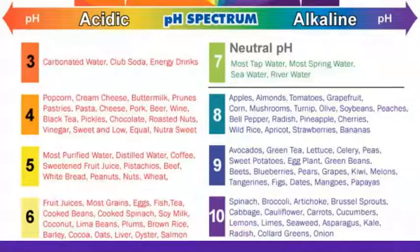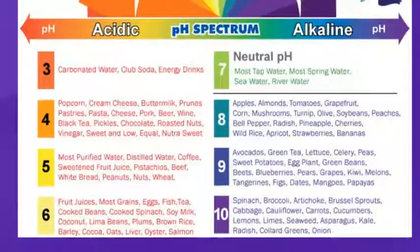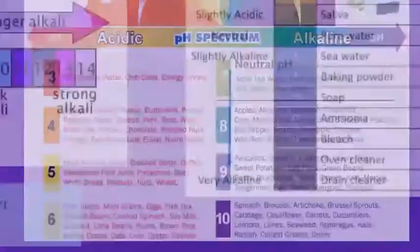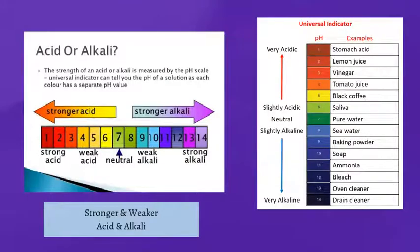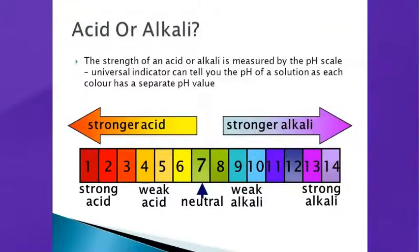pH 9 — avocados, green tea and so on. pH 10 — spinach, broccoli and so on. These are the substances used to test for acidic, alkaline and neutral. The strength of an acid or alkali is measured by the pH scale. A universal indicator can tell you the pH of a solution as each colour has a separate pH value. A stronger acid shows a more reddish colour; stronger alkaline shows purple.